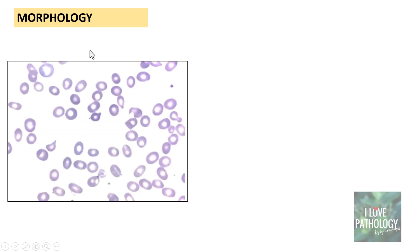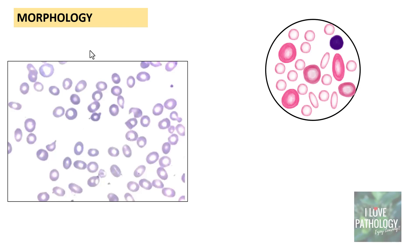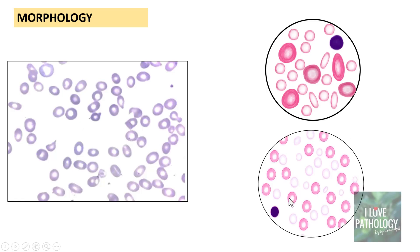Morphologically, when you examine a peripheral blood smear, you find that there is no single predominant population — that's where you suspect a dimorphic blood picture. For example, you may find macrocytes and microcytes together. Here is an illustration showing macrocytes and microcytes with a small lymphocyte for comparison, and another illustration showing normocytic as well as microcytic RBCs.